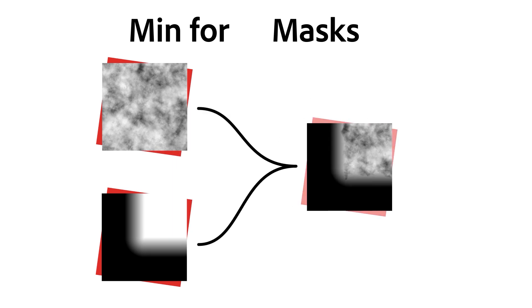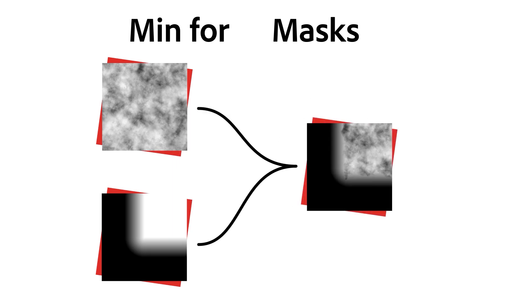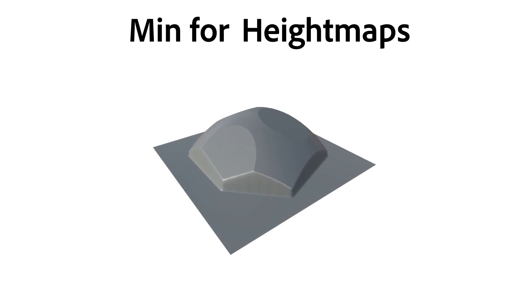Let's do a recap here. Min combines masks by picking the darkest of the two, leading to a harsher look than with Multiply. Min works like an intersection operation on two height maps, keeping only shared volume.